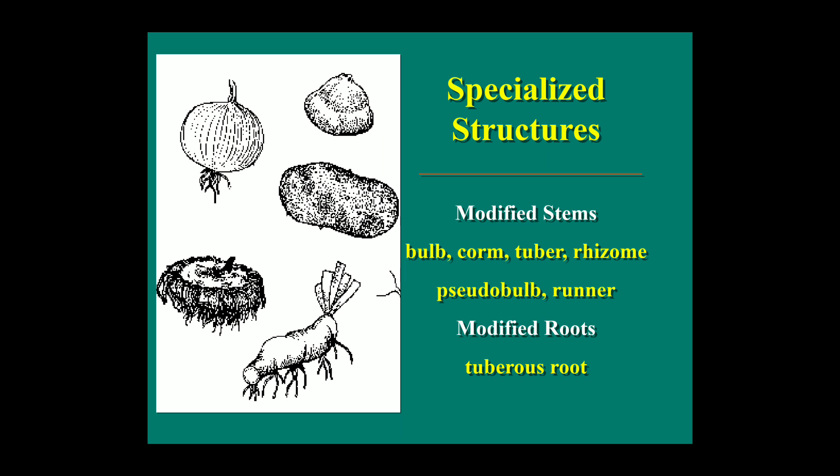Specialized structures used in vegetative propagation include modified stems such as bulbs, corms, tubers, rhizomes, pseudobulbs, and runners.